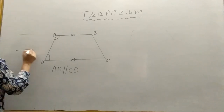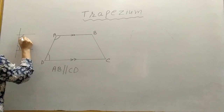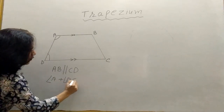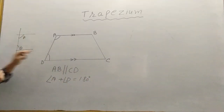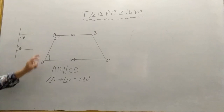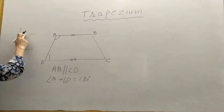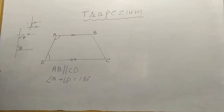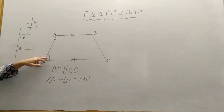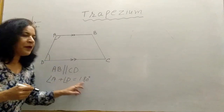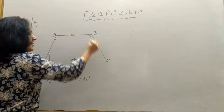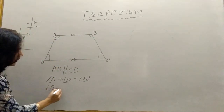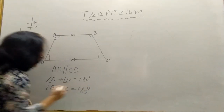If AD is a transversal, then angles A and D are co-interior angles, so angle A plus angle D equals 180 degrees. Adjacent angles on the non-parallel sides are supplementary. In class 7 you studied that if two lines are parallel and a transversal crosses them, the sum of co-interior angles is 180 degrees. Similarly, angle B plus angle C equals 180 degrees.